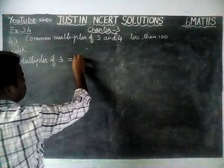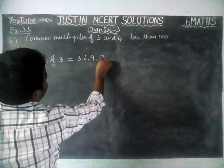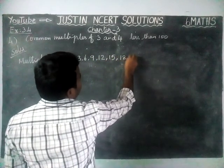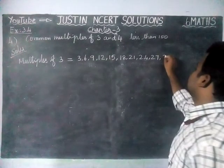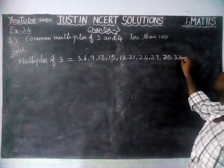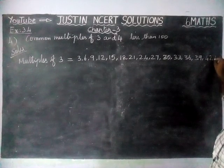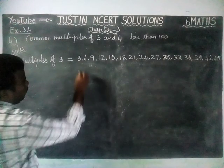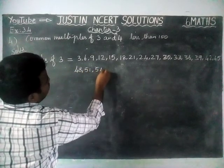Up to 100, we are going to write the answers: 3, 6, 9, 12, 15, 18, 21, 24, 27, 30.